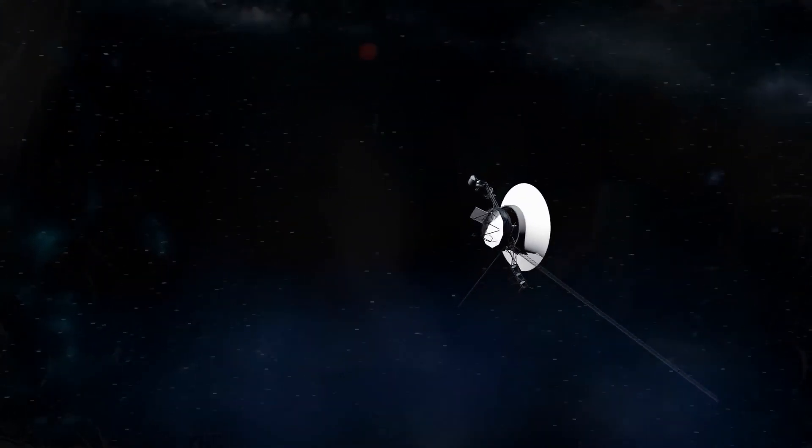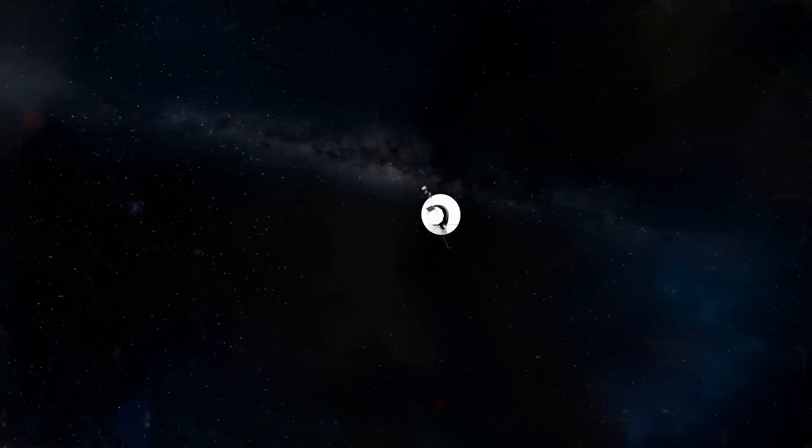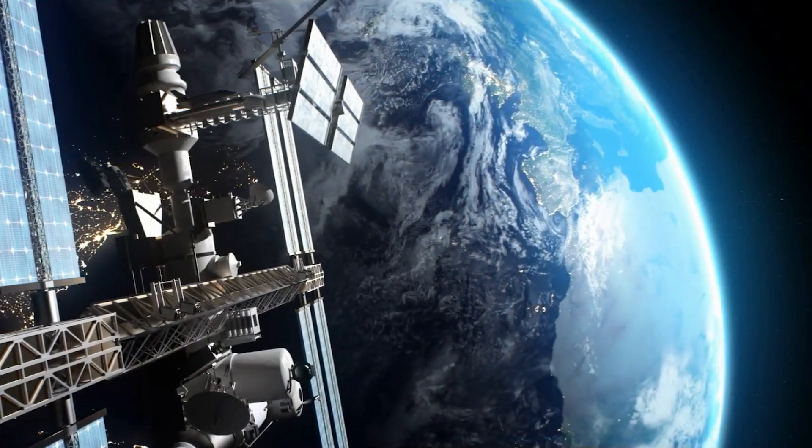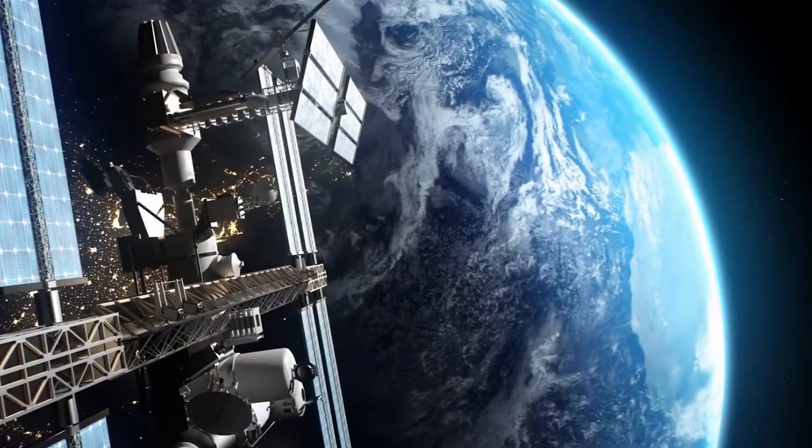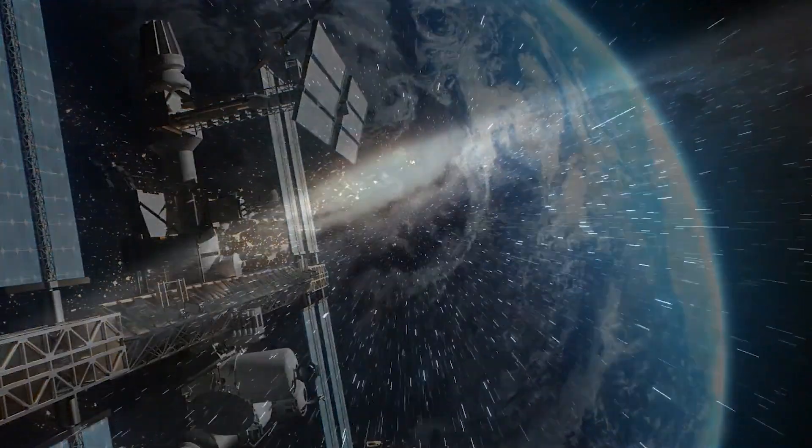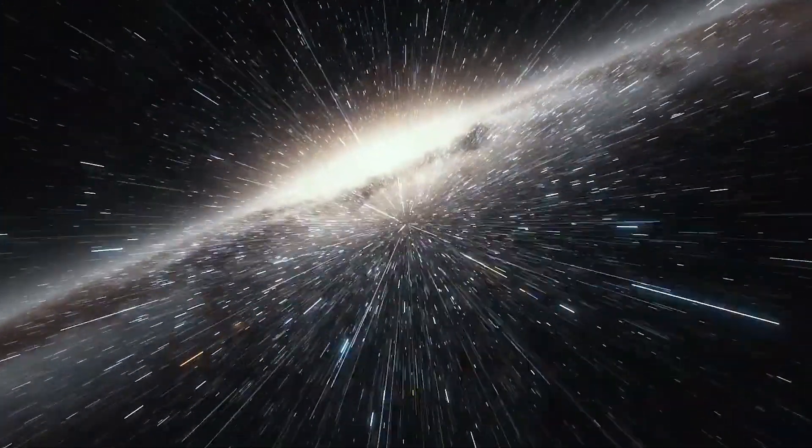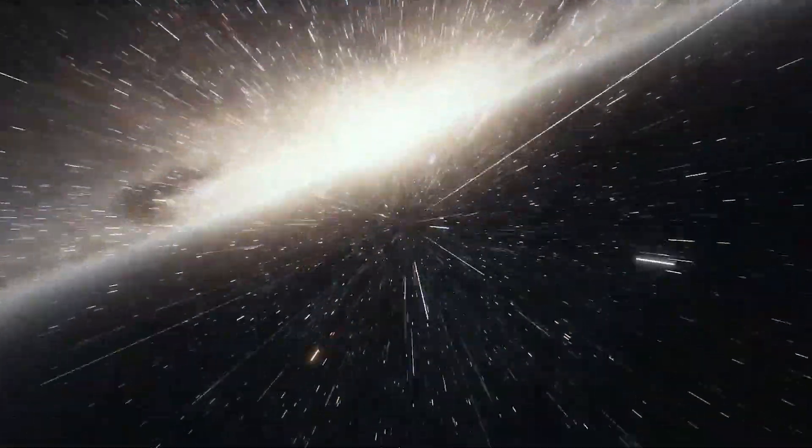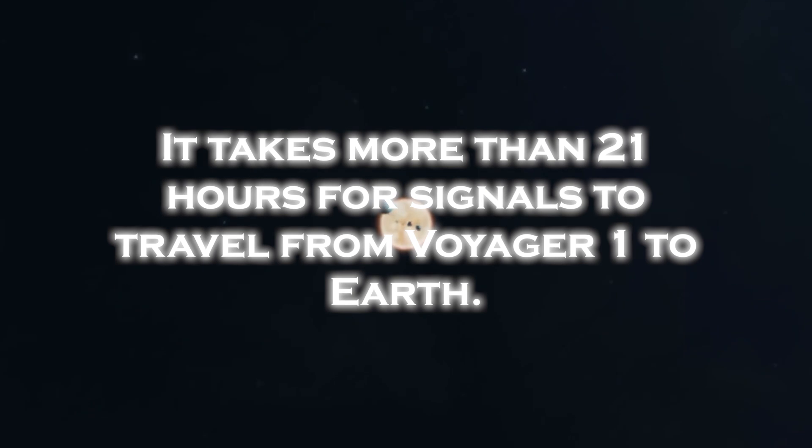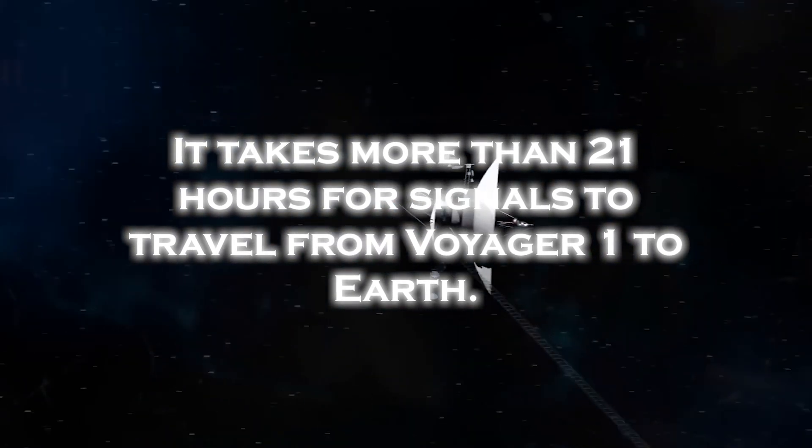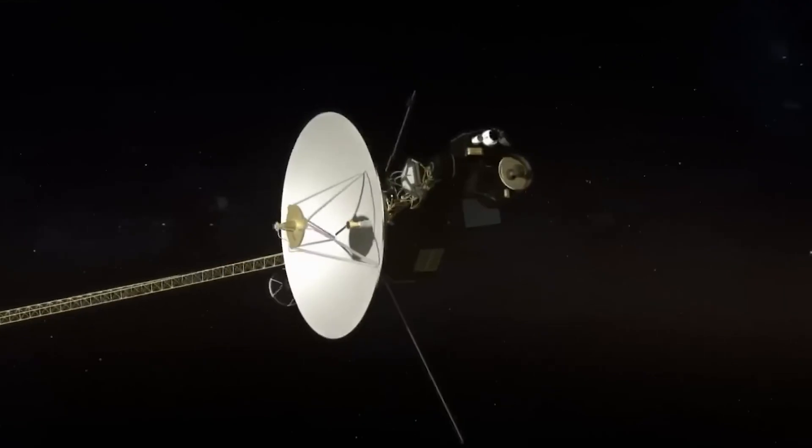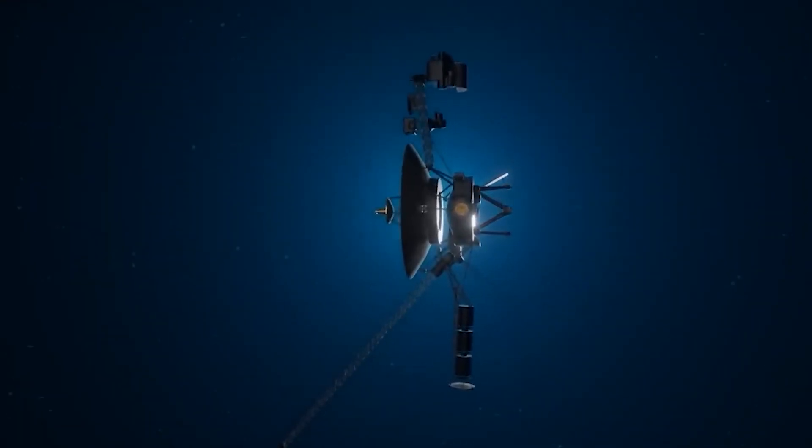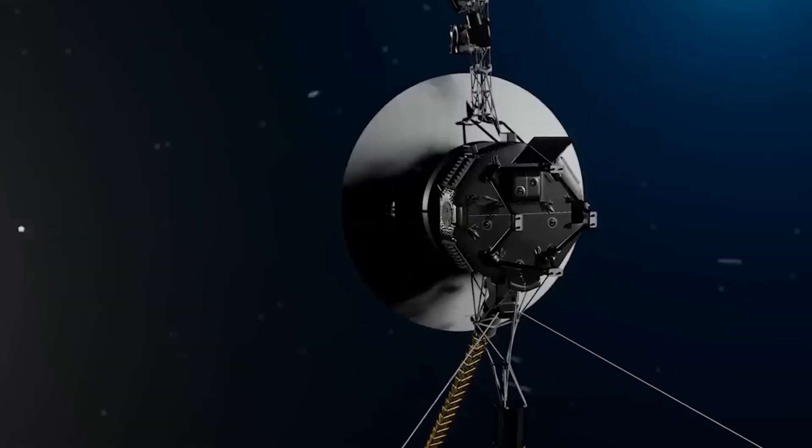Even in its current state, though, it is still very valuable to us. However, the great distance between Voyager 1 and Earth presents a significant challenge to maintaining effective communication. As the spacecraft ventures into interstellar space, Voyager 1's signal strength has weakened. It takes more than 21 hours for signals to travel from Voyager to Earth. The weak signal, combined with interference from background noise, makes it difficult to transmit and receive data.